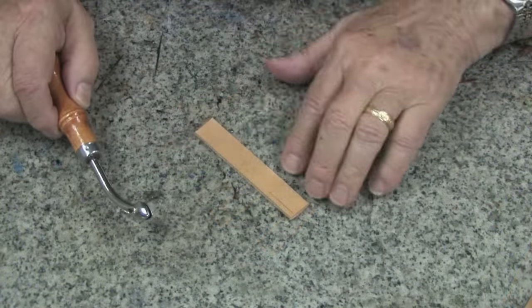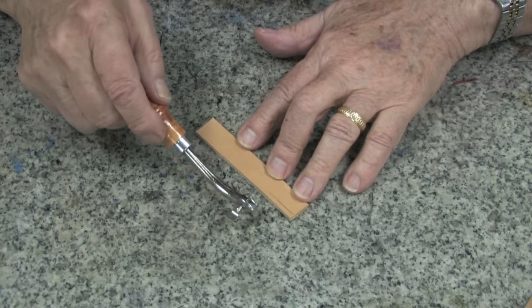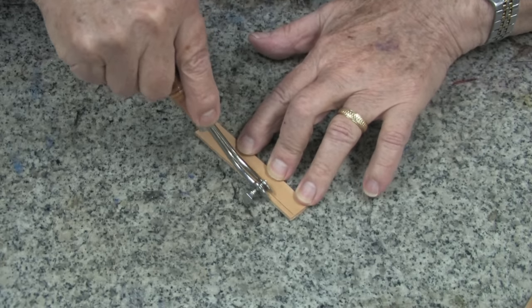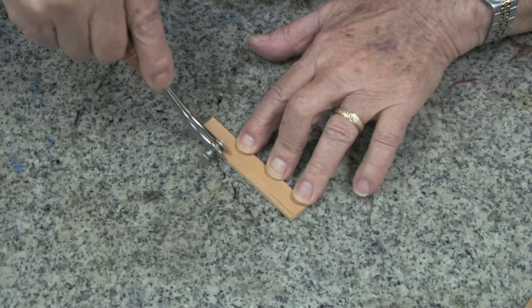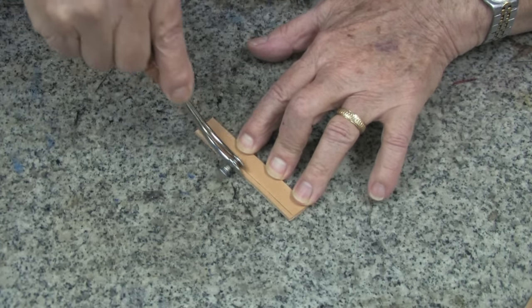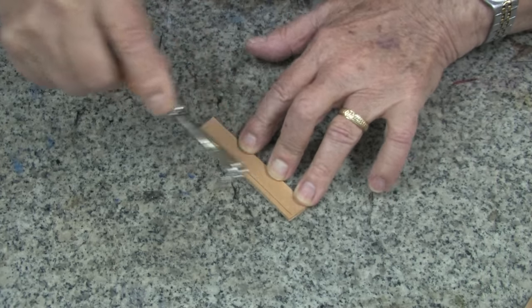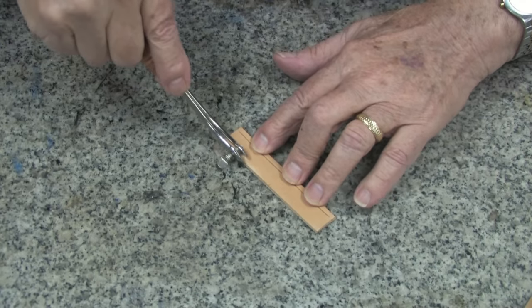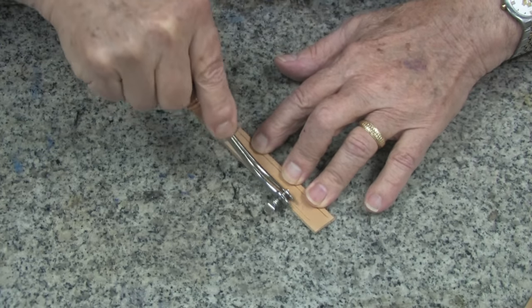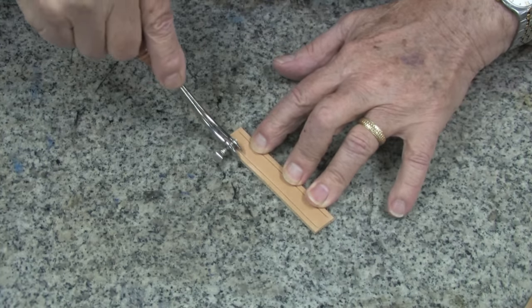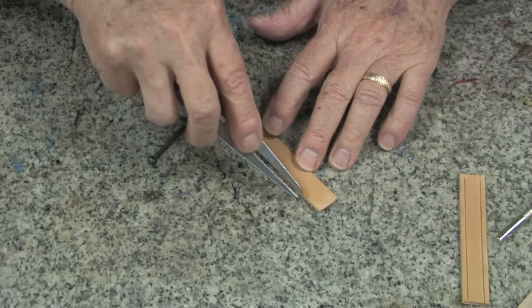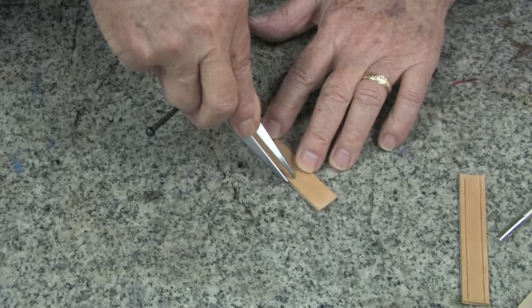There are several ways you can decorate keepers. One is to take the adjustable edge creaser and very carefully crease an edge on both sides. This makes a very good looking keeper for a dress type belt.